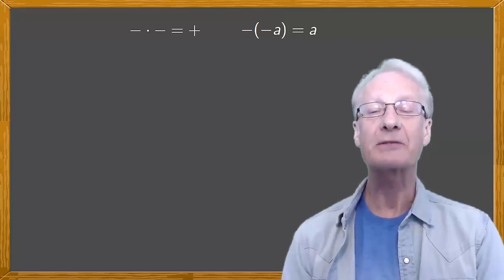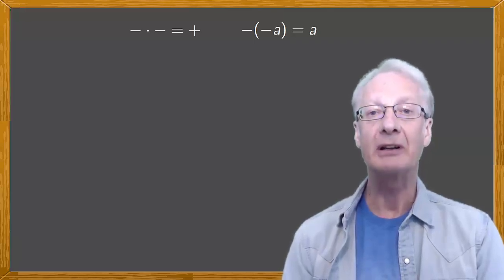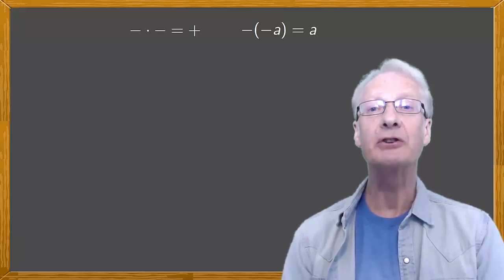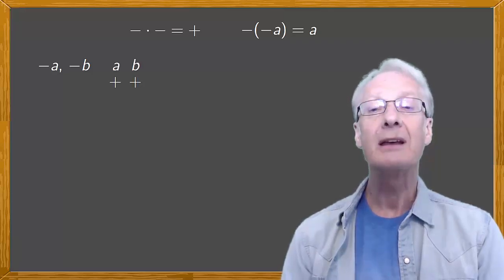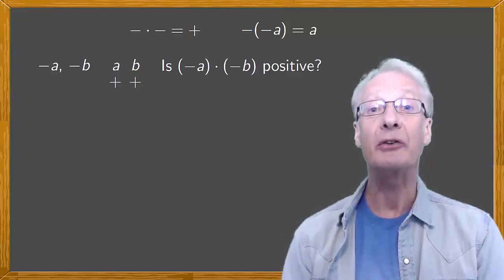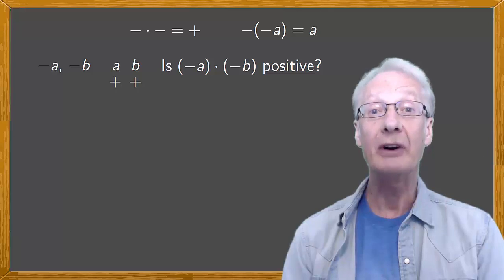It's clear that we can express any negative number as the opposite of a positive number. Let's start with two negative numbers, negative a and negative b, a and b being positive. Is negative a times negative b positive? We'll find that it is, in two steps.